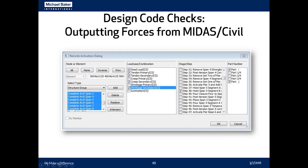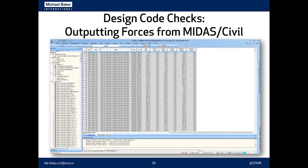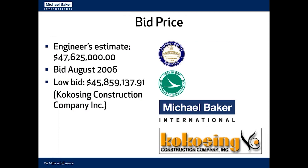Once you have the model set to the construction stage you're looking at, the stage is automatically selected. You can select whether to view results at element ends (parts i and j) or at the midpoint. Our element lengths were quite short, so we just needed the end values. Once you hit okay, a results table appears listing axial forces, shears, and moments for each element, which you can copy and paste into Excel or another document for your code checks.